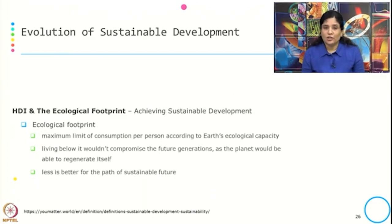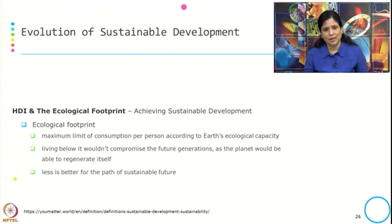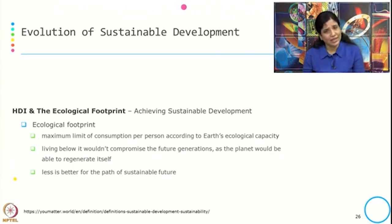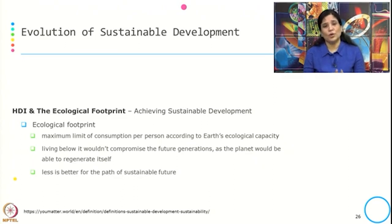The ecological footprint was another new concept added, defined as the maximum limit of consumption per person according to the Earth's ecological capacity. Living below this limit would not compromise future generations because we are not crossing the ecological capacity. The planet would be able to regenerate itself, and a smaller ecological footprint is always better for the path toward a sustainable future.